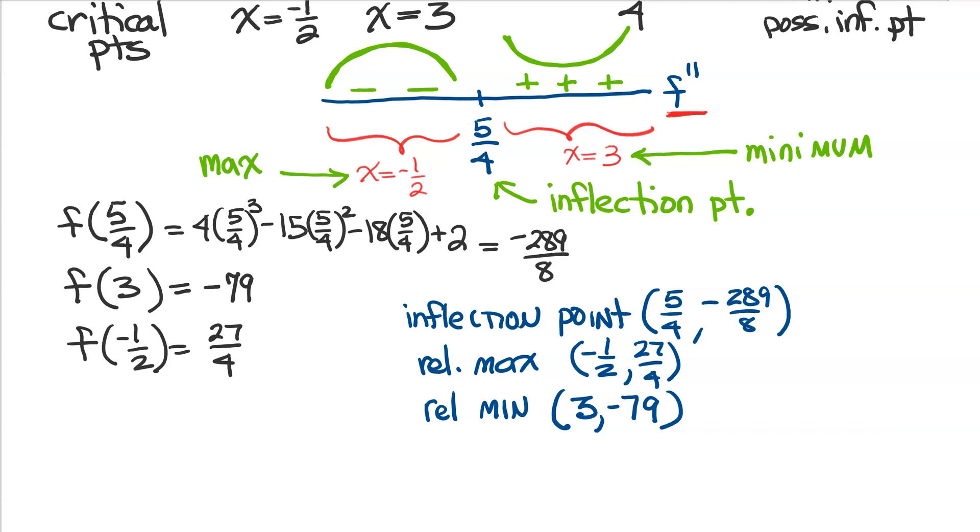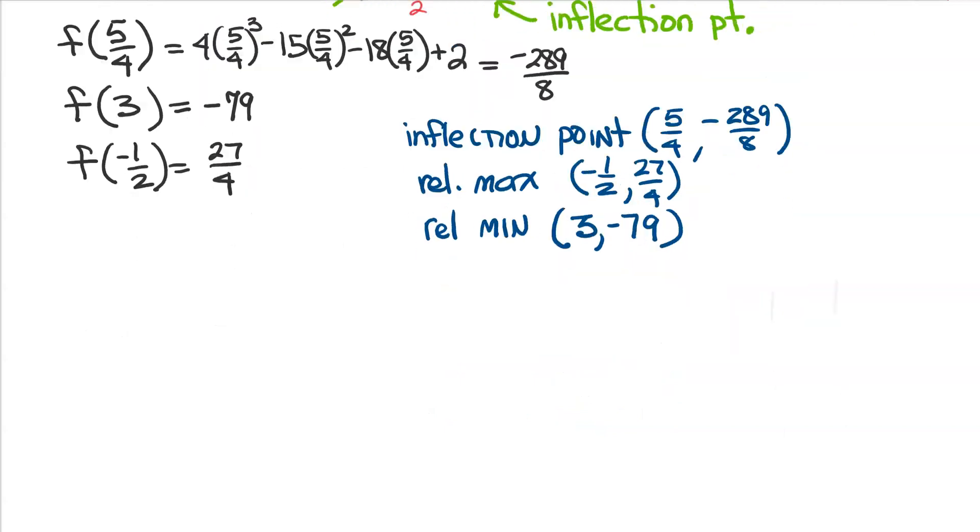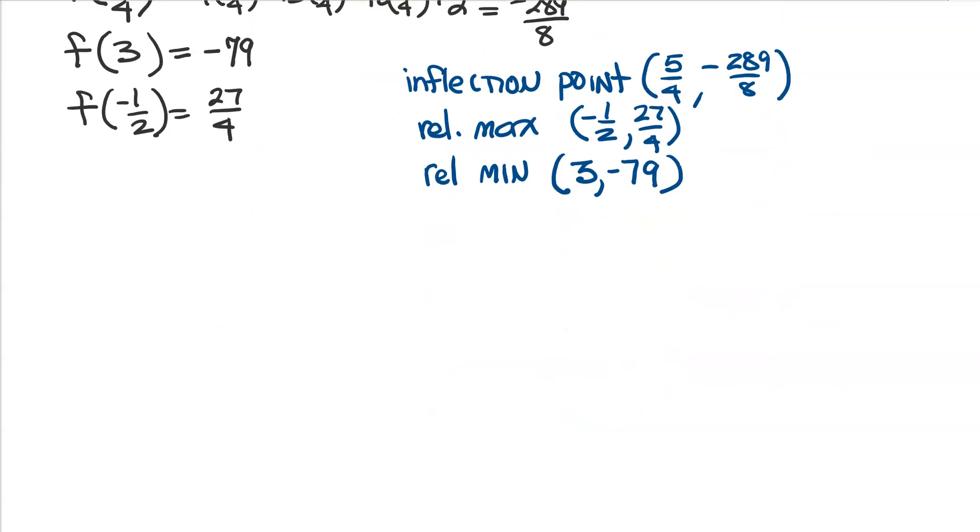Now, I've got a pretty wide range of y values. This negative 289 over 8, that's about negative 36, and I've got negative 79, and then the highest y value I have is about 6.75. So my graph is going to be quite a stretch here, so let's just do the best we can.